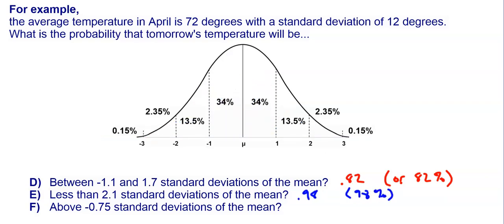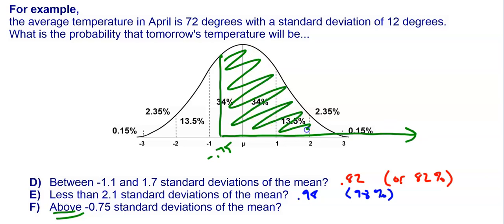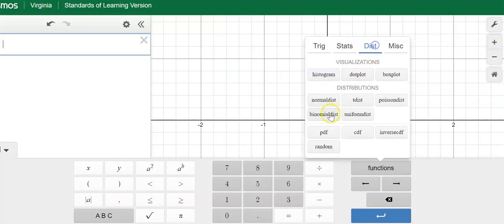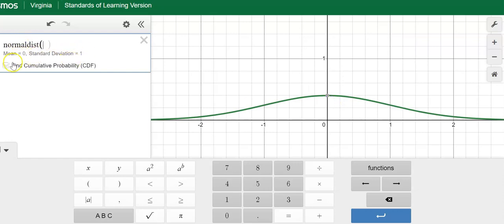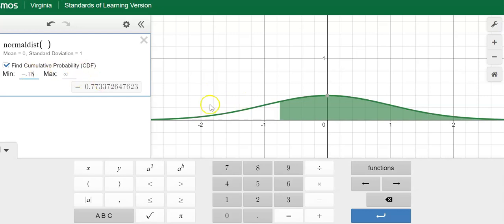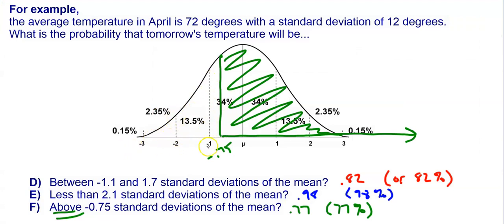Finally, what about above negative 0.75 standard deviations of the mean? Negative 0.75 is roughly here and we want everything above that, going to the right forever. On Desmos, keyboard, functions, distribution, normal distribution — leave the mean and standard deviation at 0 and 1, click the box, and set the minimum to negative 0.75 with the maximum as infinity. The shaded region matches the picture, and the probability is 0.77 rounded, or 77%. Desmos gives us a way to find partial areas and quickly get the probability and percentage.